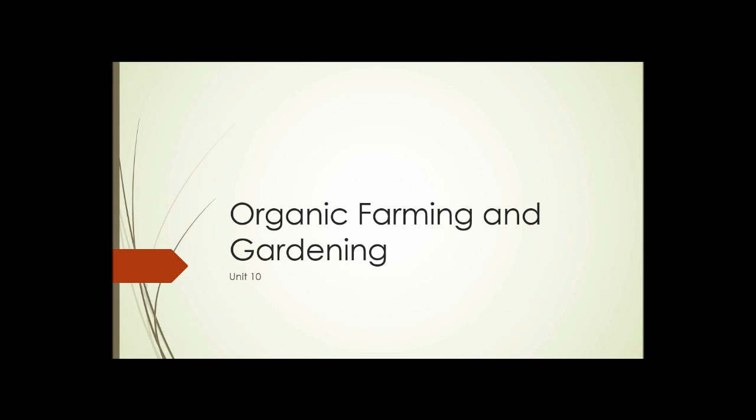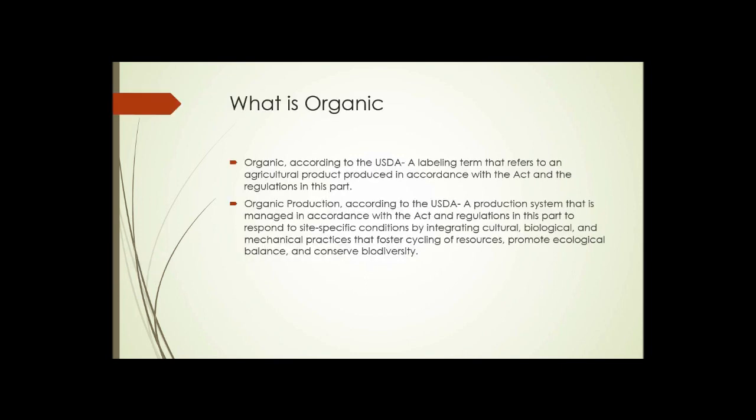Unit 10: Organic Farming and Gardening. What is organic? We hear the word a lot, but what does it really mean when something is labeled organic? According to the USDA — the United States Department of Agriculture — organic is a labeling term that refers to an agricultural product produced in accordance with the Organic Act and its regulations. Organic production is a system managed to respond to site-specific conditions by integrating cultural, biological, and mechanical practices that foster cycling of resources, promote ecological balance, and conserve biodiversity.